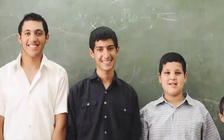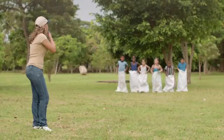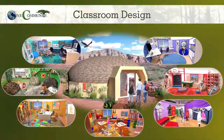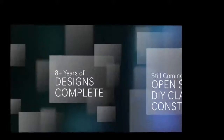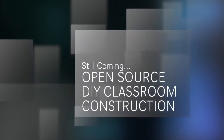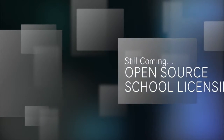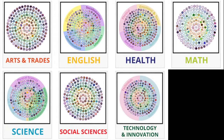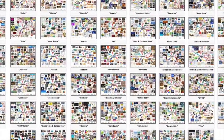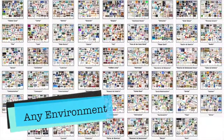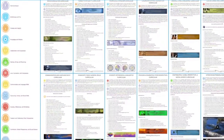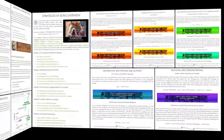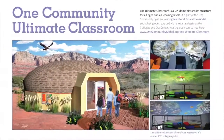One Community's approach to highest good education is designed for all age groups, adaptable to any schooling environment, inspiring and fun for all participants, and includes national standards, all subjects, lesson plans, teaching strategies, learning strategies and tools, classroom design, and more. With eight years invested in designing it, completed sections include comprehensive subject outlines covering arts and trades, English, health, math, science, social sciences, technology and innovation, and values; 52 weekly theme lesson plans; 12 detailed and progressive curriculum outlines; summaries and integration of best-known alternative education programs including Montessori, Waldorf, and Reggio; leadership skills; collaborative assessment formats; a global online free education resource hub; and classroom design.